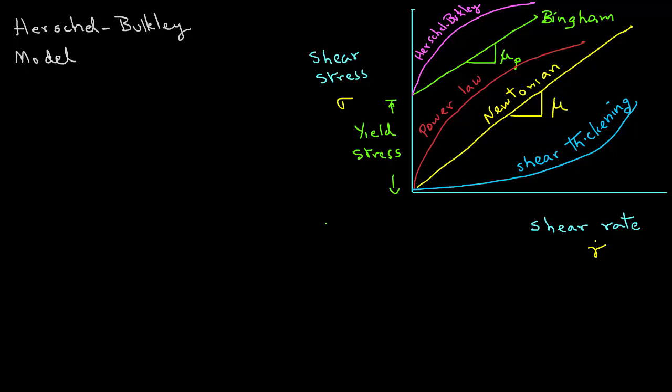in this plot we have shear stress versus shear rate — the rheogram — and we see different types of behaviors of liquids. For example, shear thickening, Newtonian, Power Law, Bingham, as well as Herschel-Berkeley type liquids.